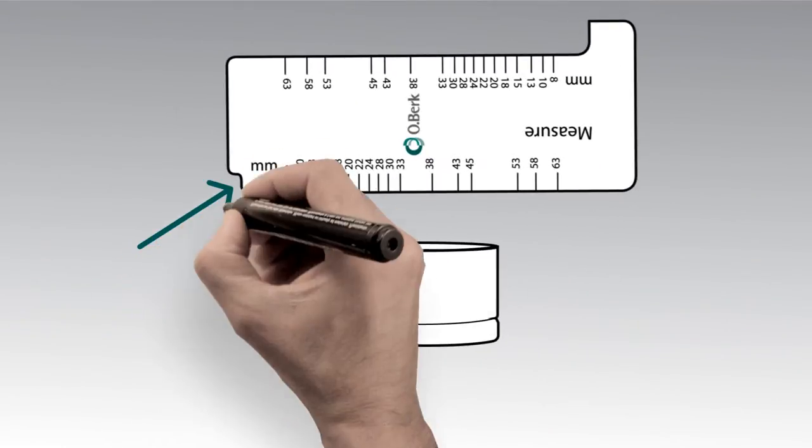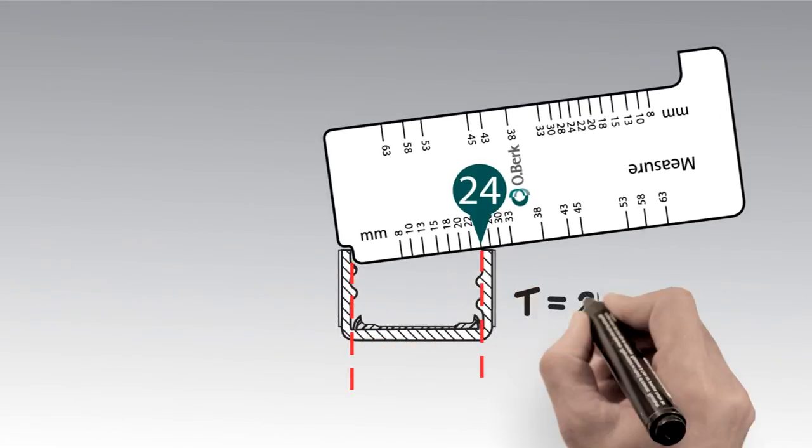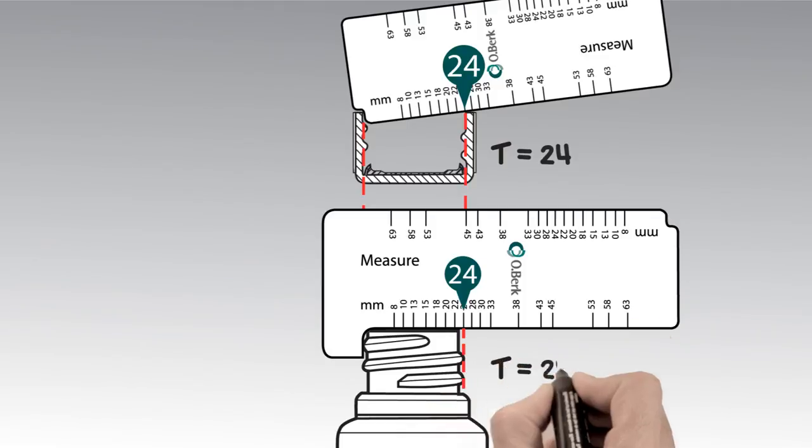To measure the T dimension of a cap, you use the notch on the other end of the gauge and put it inside the edge of the cap and measure across. A 24 millimeter cap will fit a 24 millimeter bottle opening.